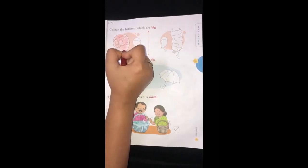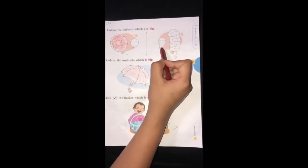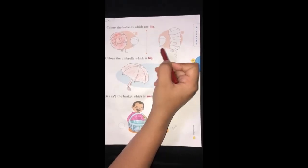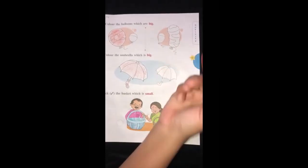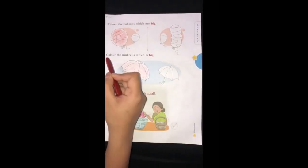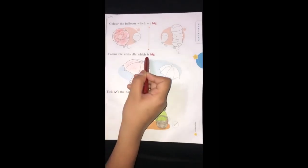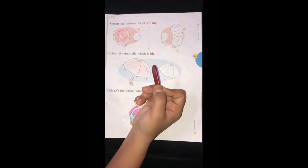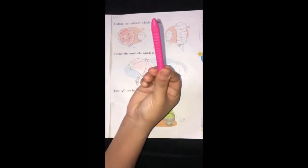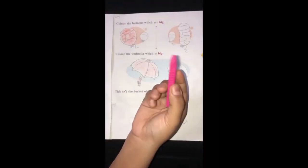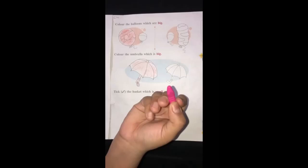Very good. Similarly, you have to find which balloon is big and color the big balloon. Second activity is color the umbrella which is big. For this, you need to take the other color. Yes, this is pink color. Let's color the umbrella with pink color.